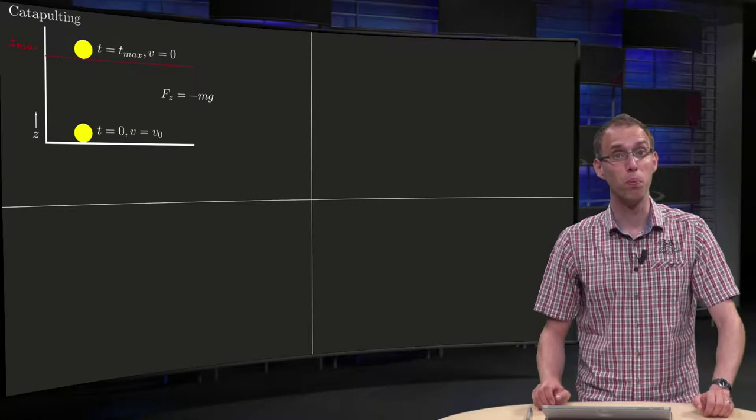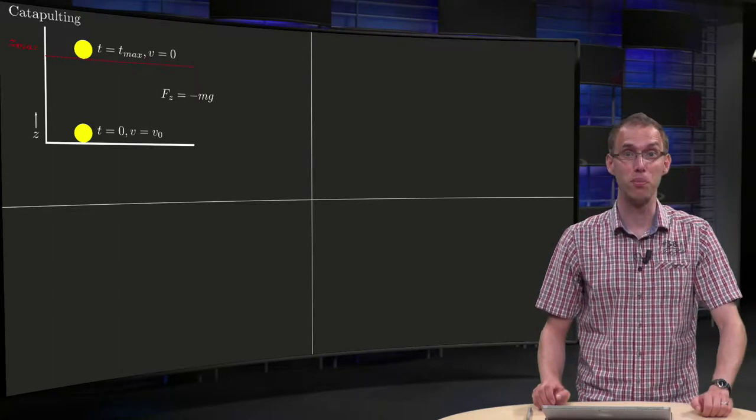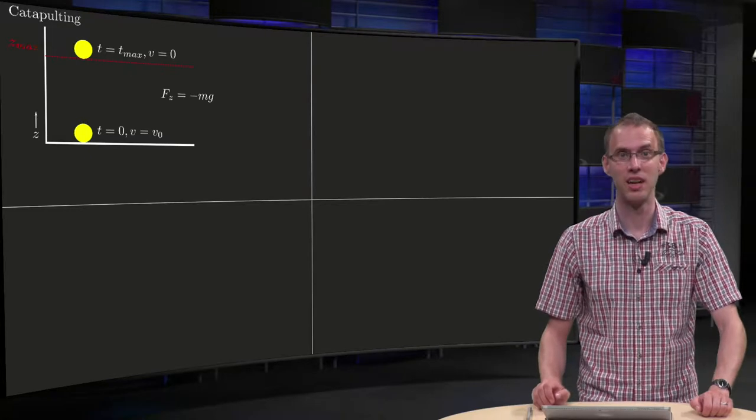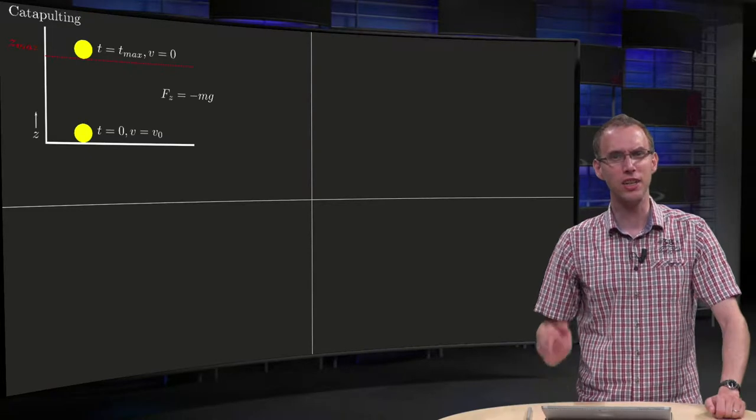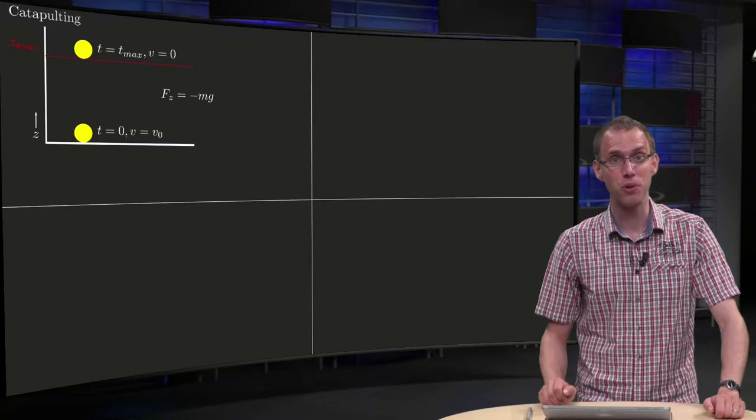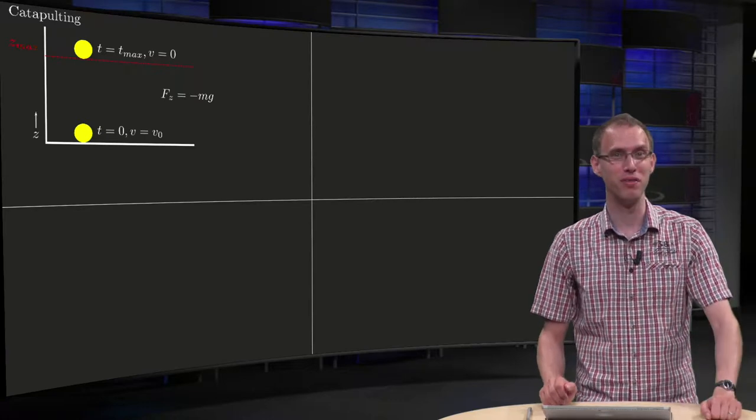In this video we will model the vertical movement of a bullet in absence of friction. But that is really easy, you learned how to do this in high school. So what is the point of the video?